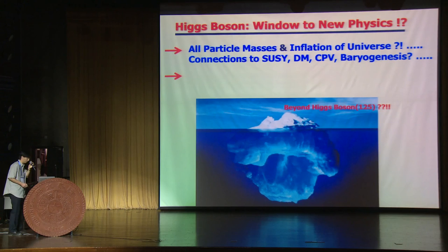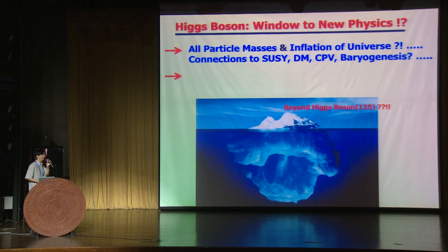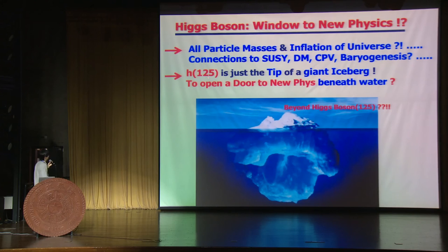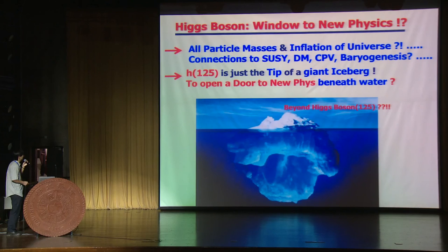In my talk, I have emphasized the Higgs boson as the window to new physics. All particle masses, and possibly also the inflation of the universe, could originate from the scalar sector of the standard model — the Higgs boson. It has deep connections to supersymmetry, dark matter, CP violation, and baryogenesis. I would claim that the 125 GeV Higgs boson is just at the tip of the iceberg, and it possibly opens a door to new physics below the surface.